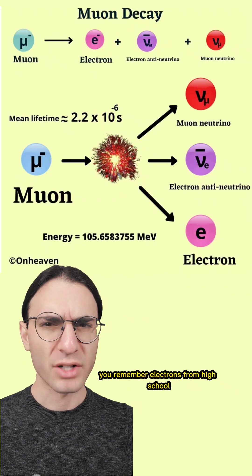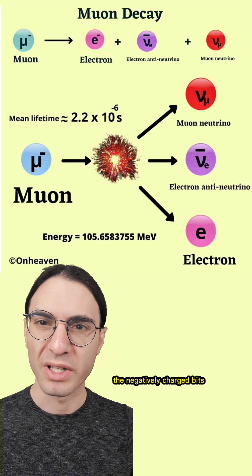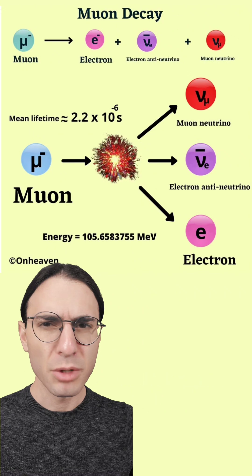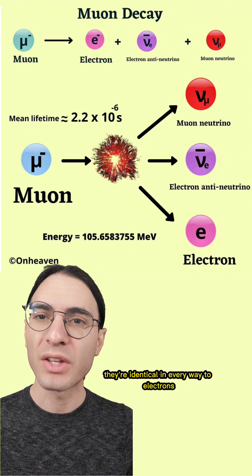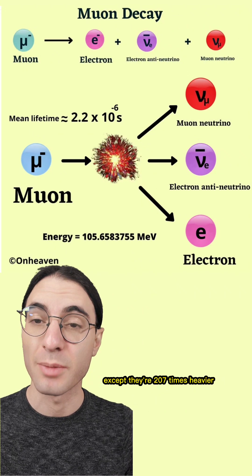First, a crash course on muons. You remember electrons from high school, the negatively charged bits that orbit the center of atoms? Muons are like their heavyset cousins. They're identical in every way to electrons, except they're 207 times heavier.